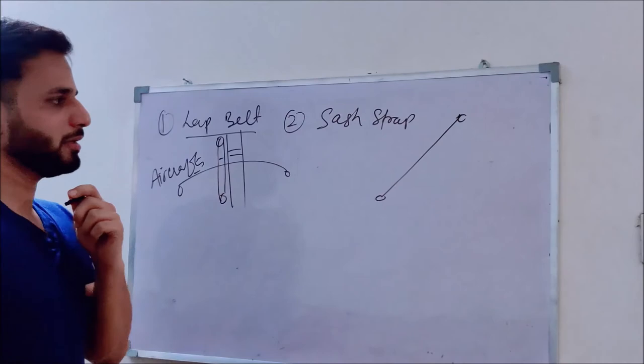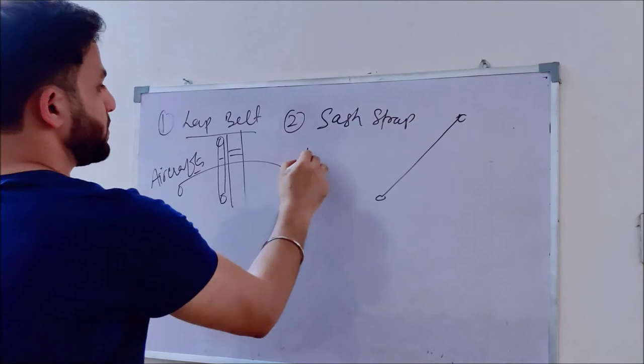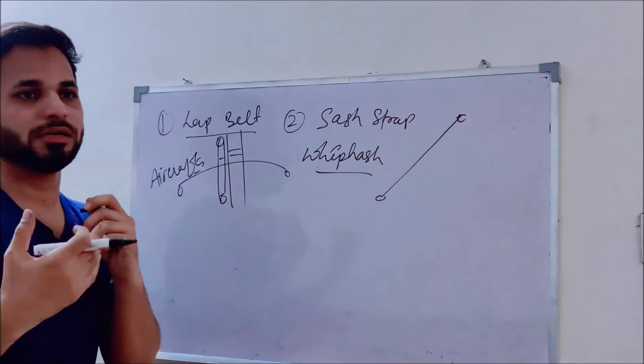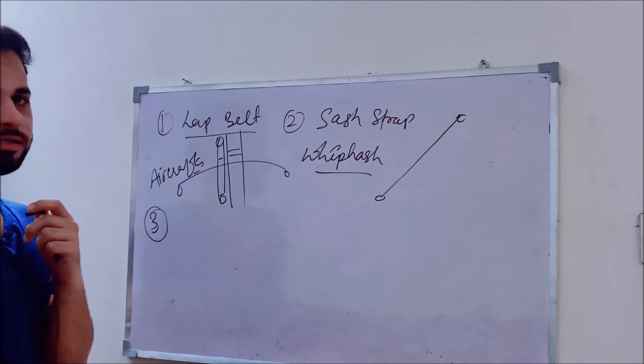The second type is the shoulder strap, which goes diagonally across the upper body. This kind of belt is responsible for whiplash injuries, because of sudden flexion and hyperextension.